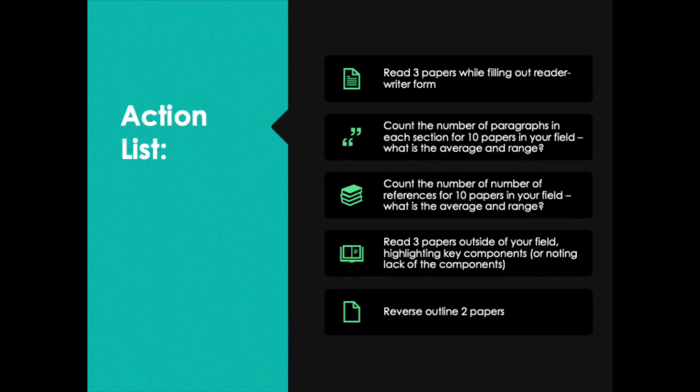That benchmark can give you a target for how long each of your sections should be. Action item number three is to count the number of references for 10 papers in your field. Again, calculate the average and look at the range to understand the normal number of references cited for papers in your field.